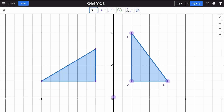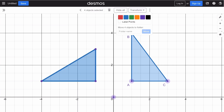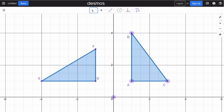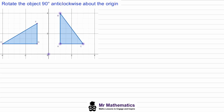We'll put the labels on, draw a box around the image, press menu, and label the points. Now we know what the transformed image will look like — we'll label ABC as the object and triangle DEF as the transformed image.